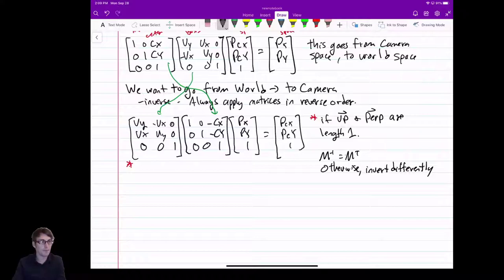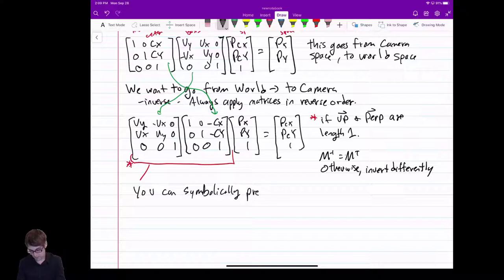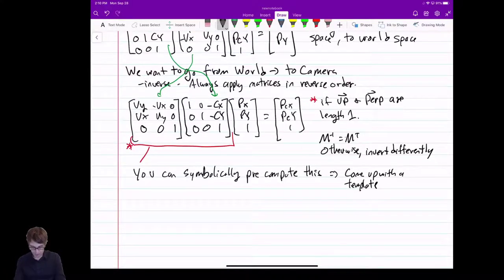So, this is really neat. You can take this, and you can pre-compute it, right? You can symbolically pre-compute this. And what I mean by that is you can go, okay, well, it's actually up x times this, and you start having, like, if I multiply the cx in there, you can actually come up with a template. And just fill it in with your up, your perpendicular, or just your up vector and your cx. You can just fill it in. If you look online, sometimes you'll find those templates. I don't like that way because it's error-prone. It's confusing. So, this method, I think, is more intuitive.